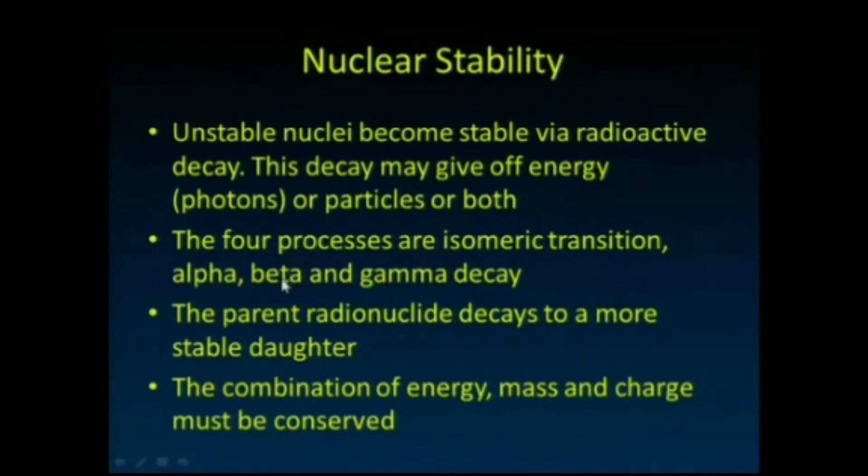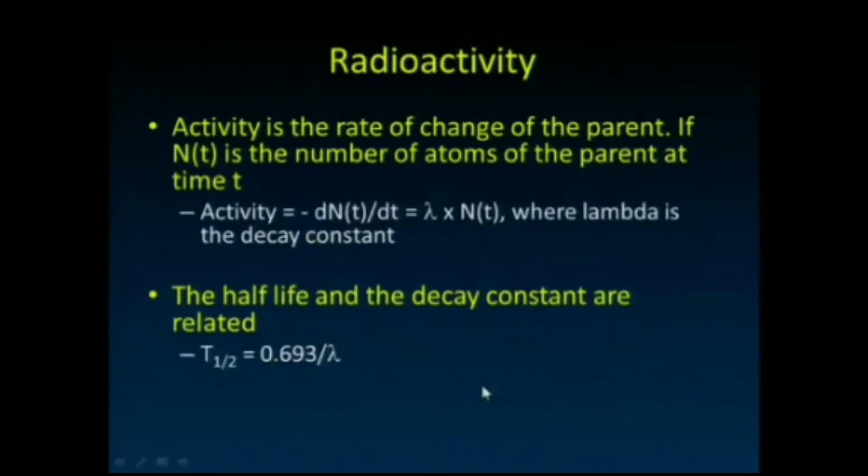The four processes are isomeric transition, alpha, beta, gamma, and electron capture actually. The parent radionuclide decays to a more stable daughter. The combination of energy, mass, and charge has to be conserved. So what is radioactivity? Activity is the rate of change of the parent into the daughter. If we have N number of parent atoms at a given time T, that rate of change—the change in the parent per unit time—is simply proportional to the number of parent that's present.